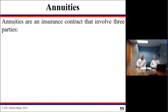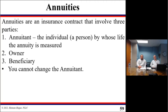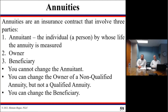Annuities are an insurance contract that involves three different parties. First, you have the annuitant — that's the individual whose life is used to measure the length of the annuity. Next, you have the owner of the annuity, and then you have the beneficiary of the annuity. You can't change the annuitant — that's not possible. But you can change the owner of a non-qualified annuity; you don't do that on a qualified annuity. You can also change the beneficiary.